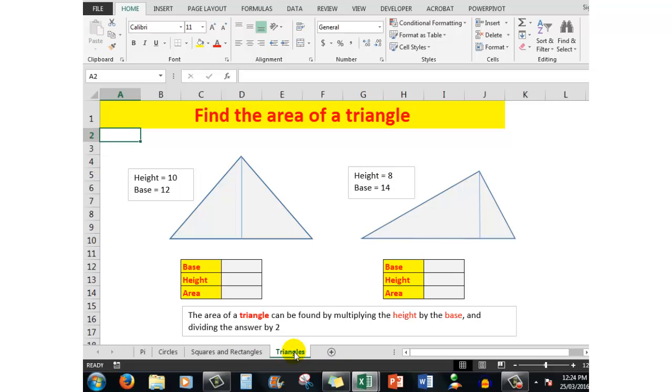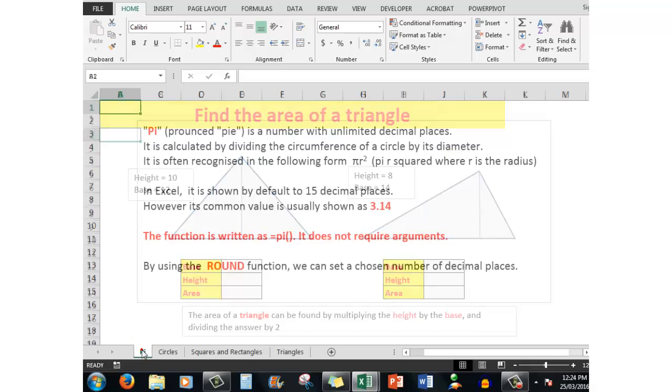First of all, let's look at pi. It's calculated by dividing the circumference of a circle by its diameter. It's often recognized in the following form: pi r squared, where r is the radius of the circle. As we'll see, the radius is half the diameter. In Excel, pi is shown by default to 15 decimal places, but its common value is usually shown as 3.14.